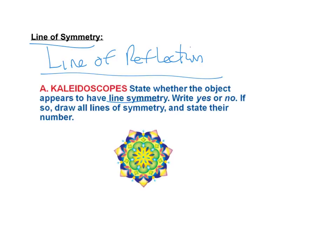So here, state whether the object appears to have line of symmetry. Write yes or no. If so, draw all the lines of symmetry and state their number. So this is obviously yes. So basically, could I draw a line, fold the shape on the line, and have it match up perfectly? And the answer is yes. I could go here, here, here, here, here, here, here.